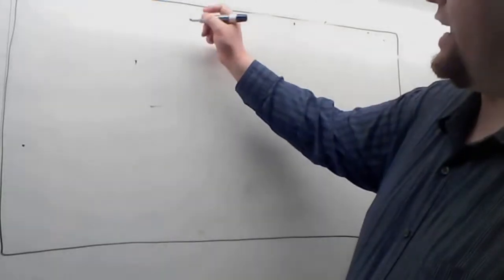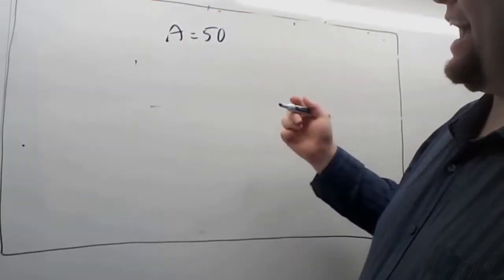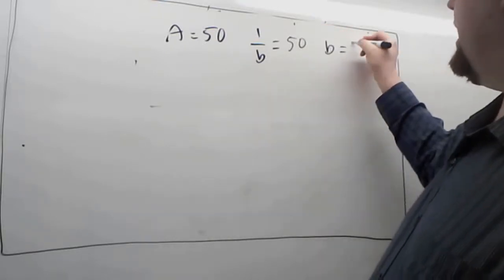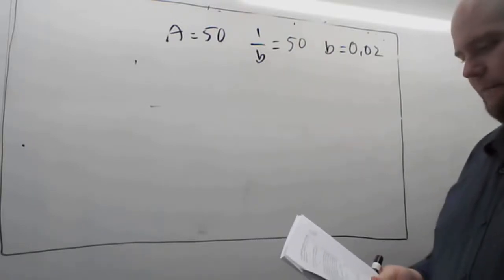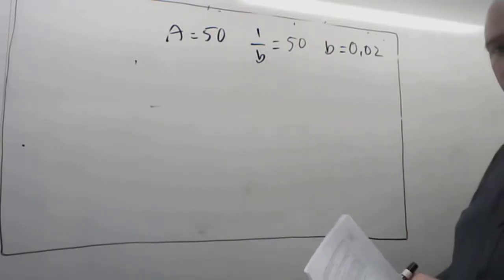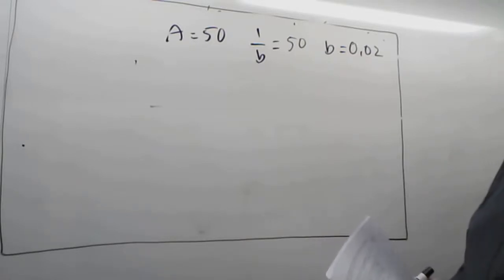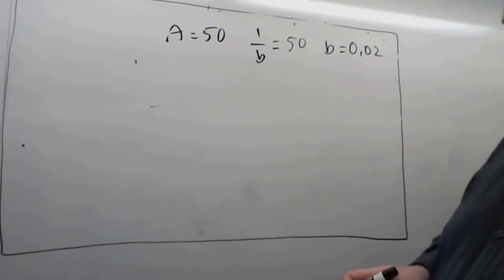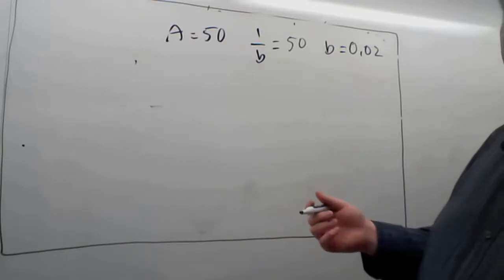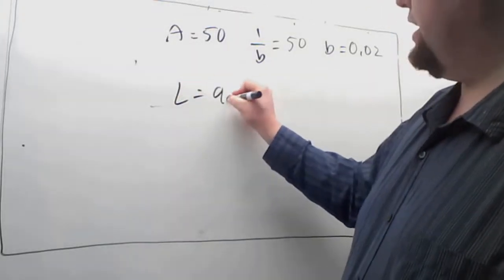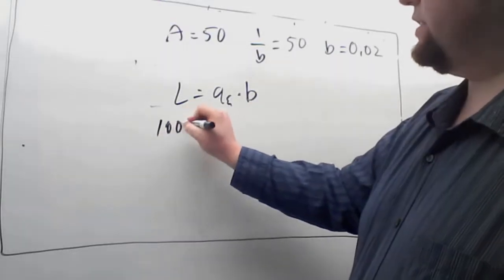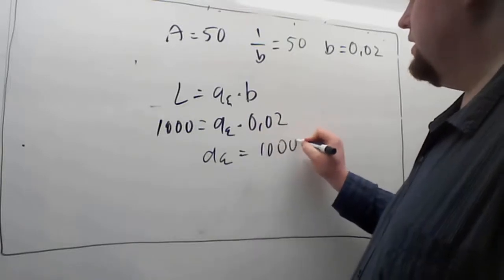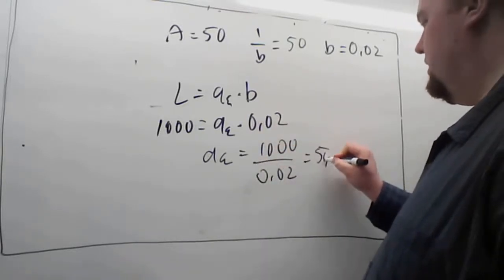If our closed-loop gain is going to be 50, then in the ideal case 1/B equals 50, so B equals 0.02. We'd need a feedback network with an attenuation of 0.02 — dividing the feedback by 50. Knowing B equals 0.02 and L must be at least 1,000, we write L = A_ε · B, so 1,000 = A_ε × 0.02, giving A_ε = 50,000.